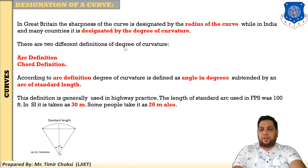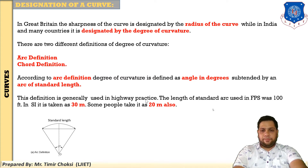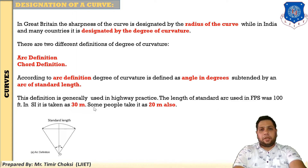Now there are two different definitions of degree of curvature: one is the arc definition and one is the chord definition. According to the arc definition, degree of curvature is defined as the angle in degrees subtended by an arc of standard length. This definition is generally used in highway practice. The length of the standard arc used in FPS was 100 feet; in SI, some people take it as 30 meters and some as 20 meters.